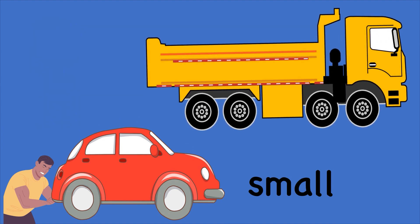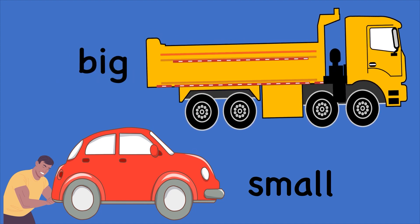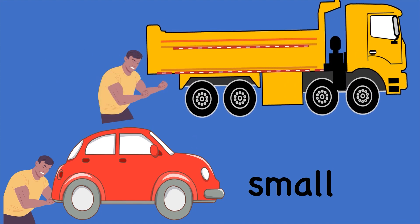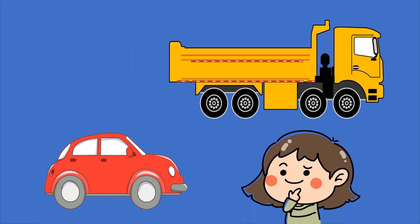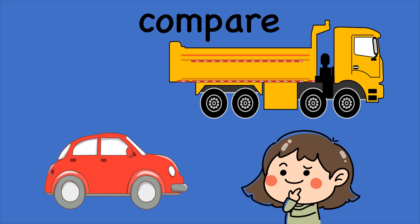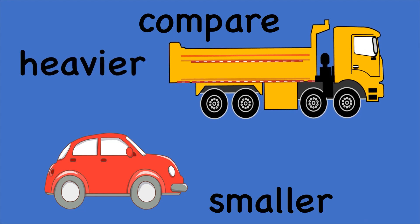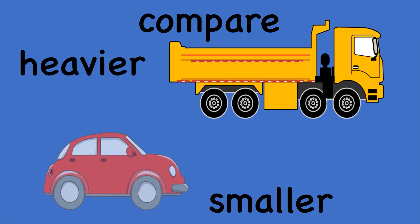This car is yellow. Its size is big and it's a heavy truck. Can we measure something of these vehicles? If you can measure it, it means you can compare it. The red car is smaller than the yellow car. The yellow car is heavier than the red car.